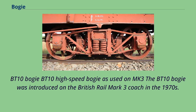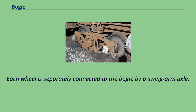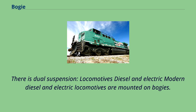The BT-10 high-speed bogey is used on MK3. The BT-10 bogey was introduced on the British Rail Mark 3 coach in the 1970s. Each wheel is separately connected to the bogey by a swing-arm axle, and there is dual suspension.